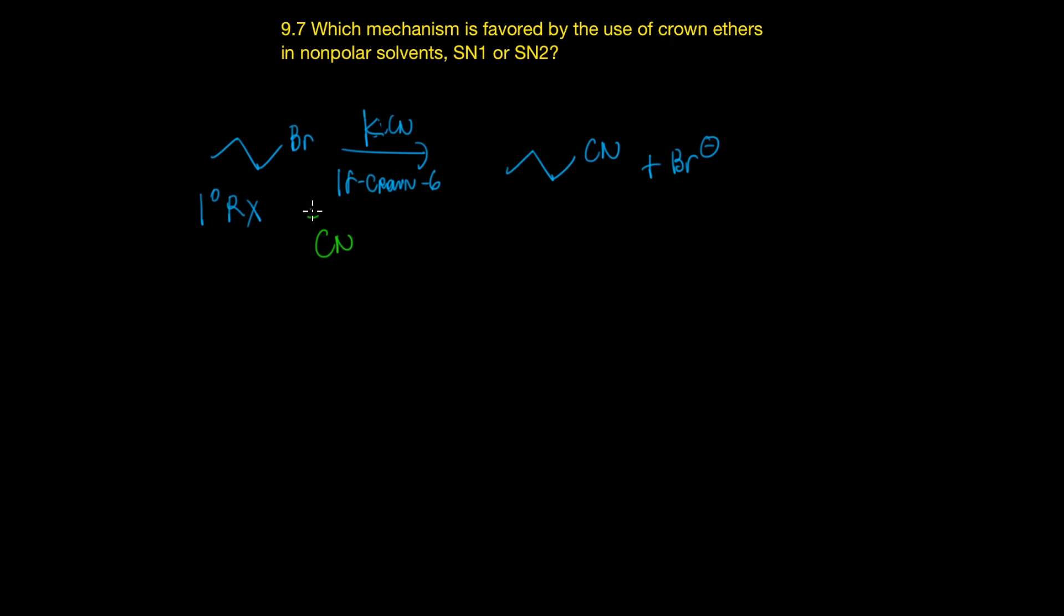We have cyanide which is a nucleophile and it attacks directly, kicks off the leaving group and gives you the product. The rate is proportional to both the concentration of cyanide, the nucleophile, and the substrate. How about SN1? This is SN2 because it involves two things.